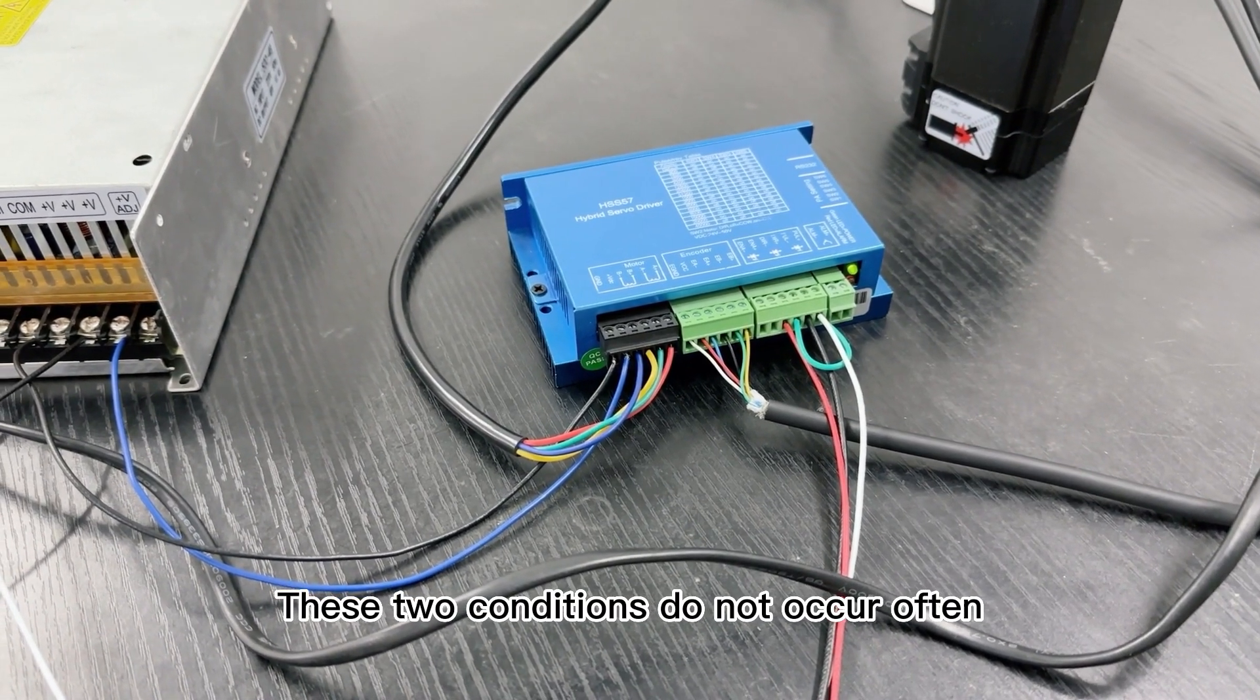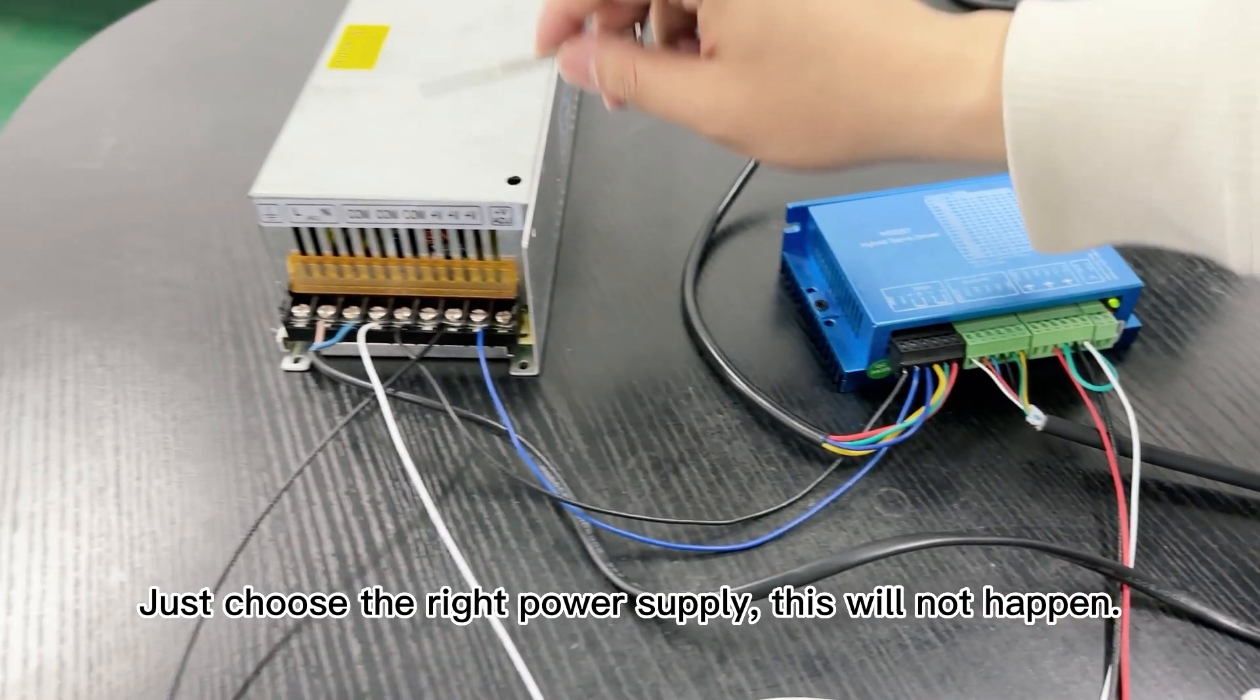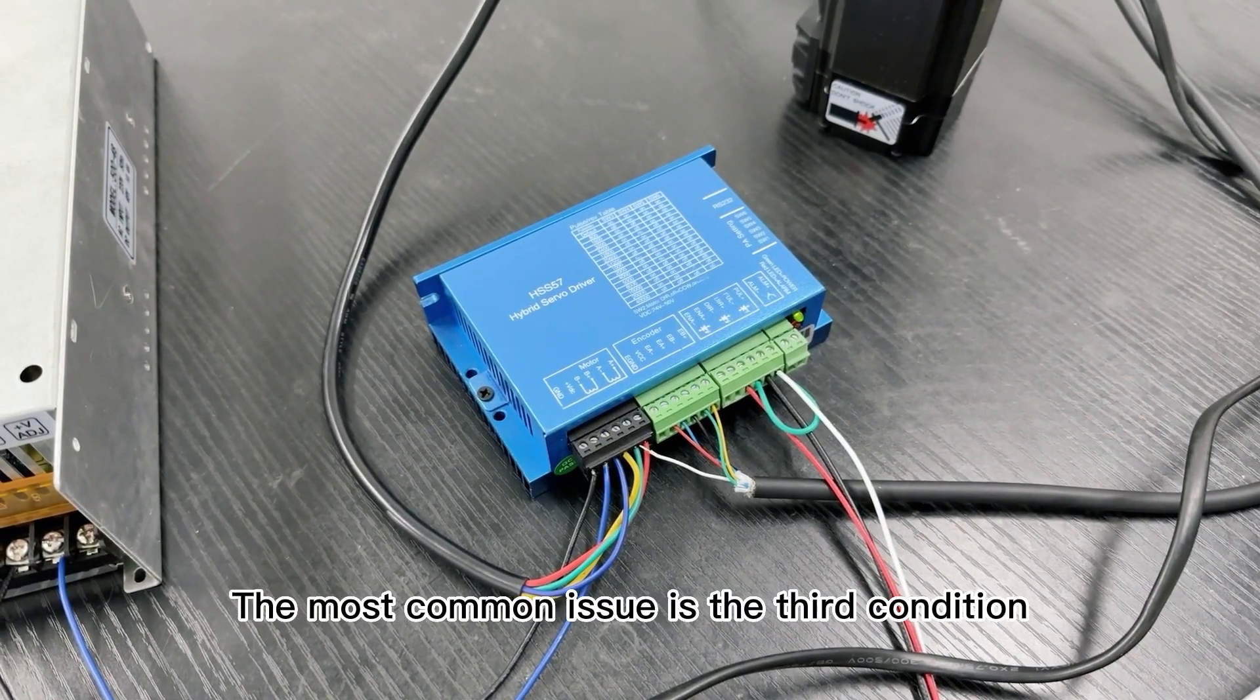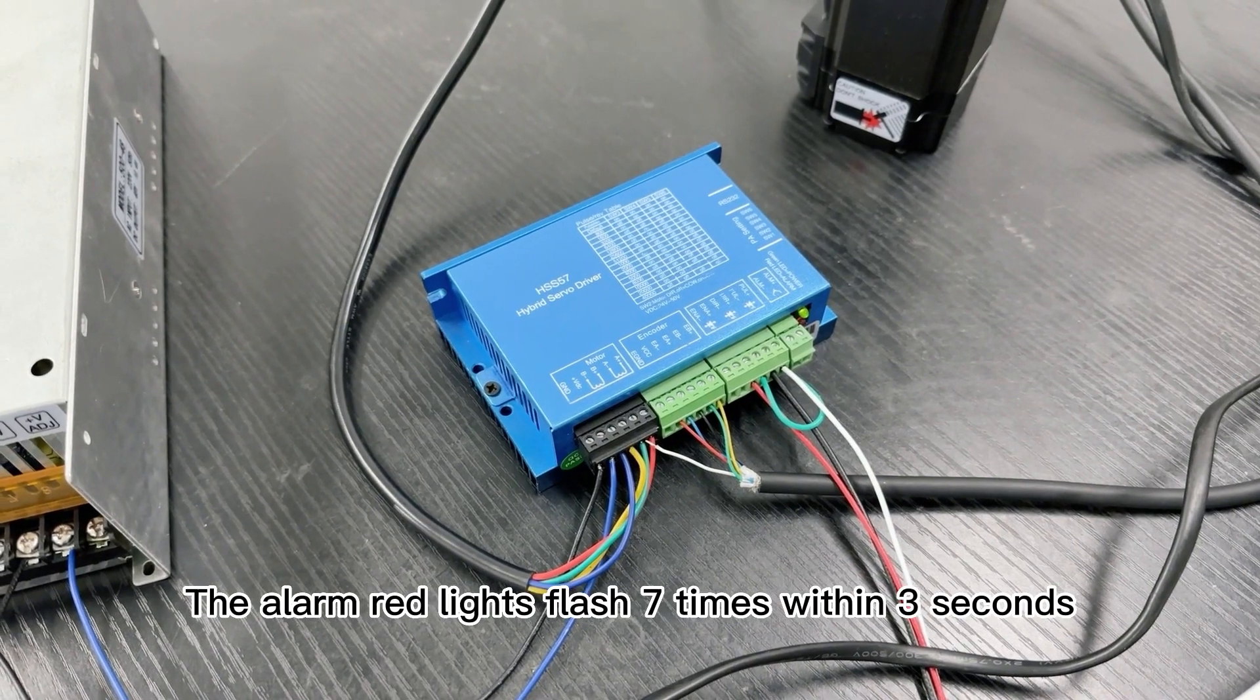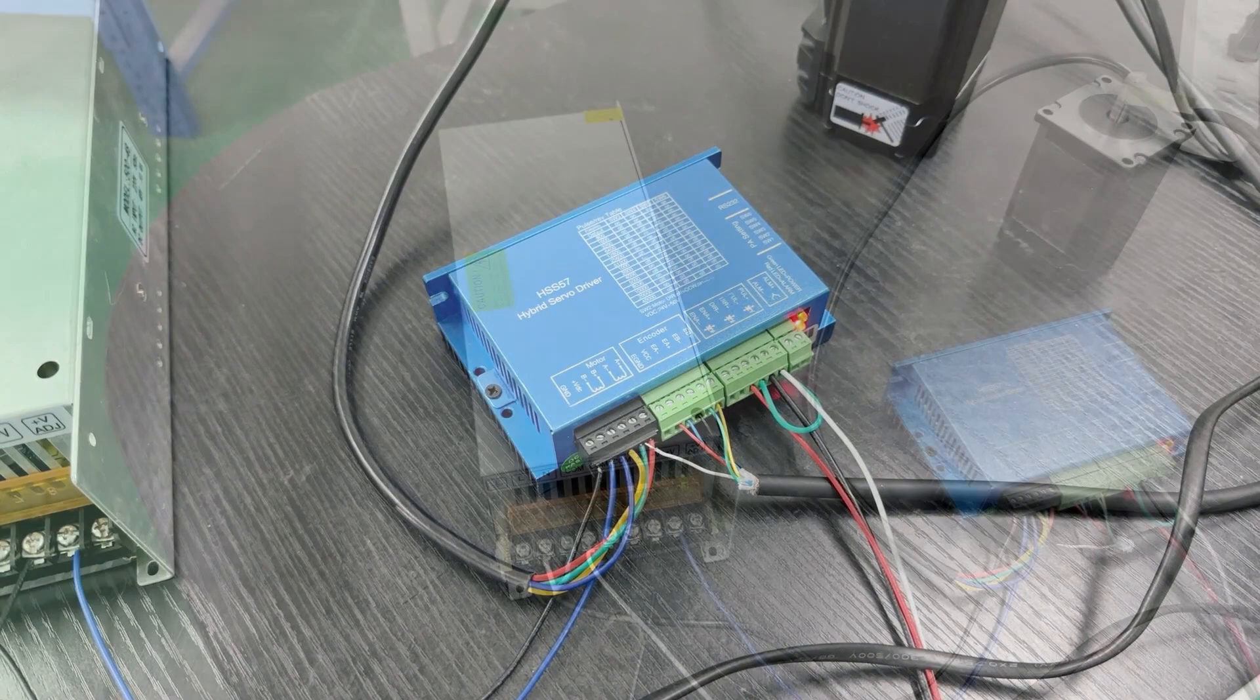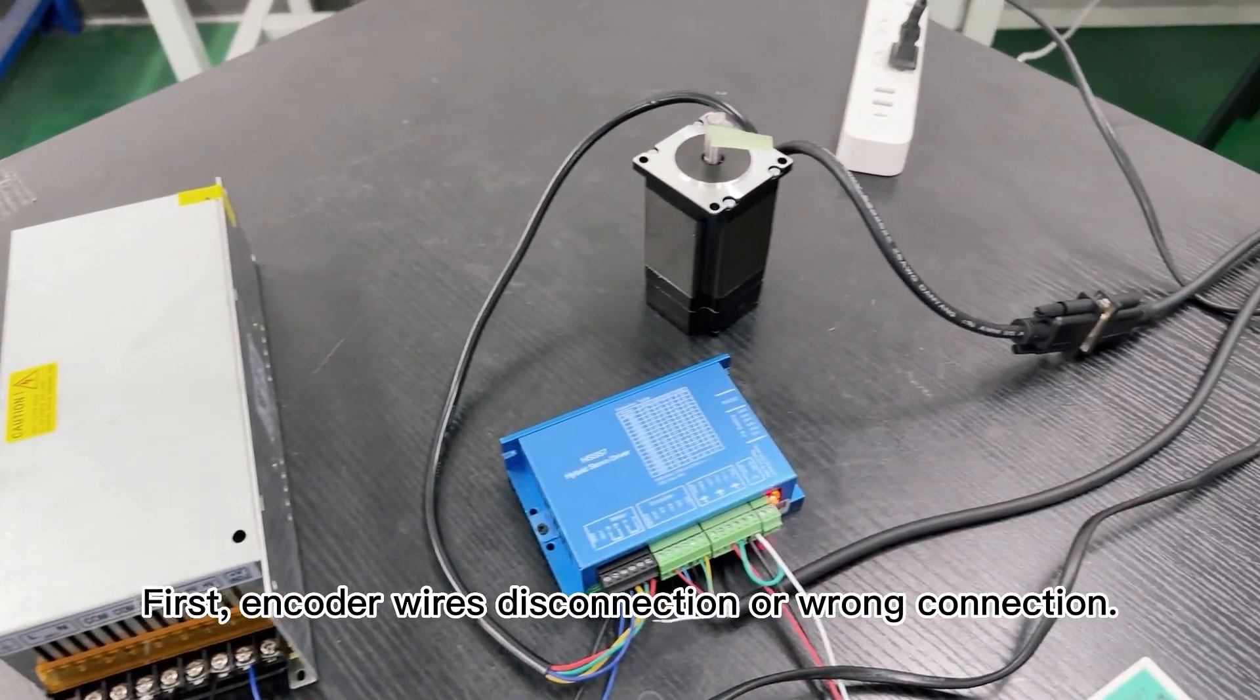These two conditions do not occur often. Just choose the right power supply and this will not happen. The most common issue is a third condition: the alarm red lights flash seven times within three seconds. This problem occurs for two reasons. First, encoder wires disconnection or wrong connection.